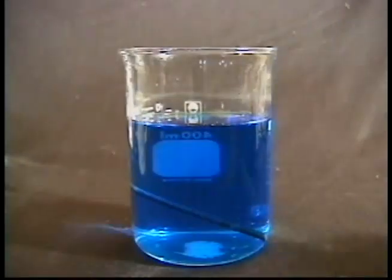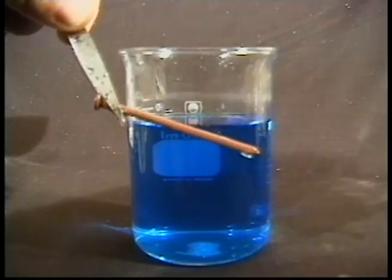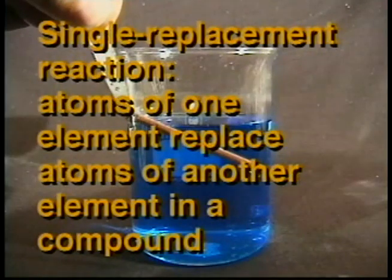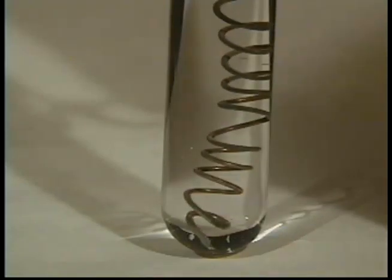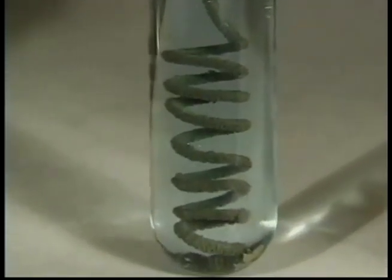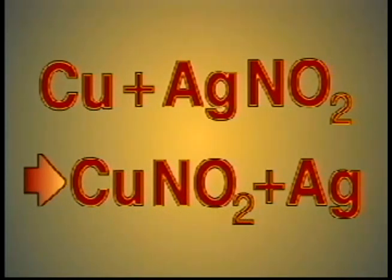In some reactions, it is possible for an element to replace an element in another compound. Here, the copper and the blue solution replace the iron coating on the nail. In a single replacement reaction, atoms of one element replace atoms of another element in a compound. For example, when copper wire is placed into a solution of silver nitrate, over time the copper gradually replaces the silver in the solution, forming a blue copper nitrate solution. This single replacement reaction is represented by the equation: Cu + AgNO2 yields CuNO2 + Ag.